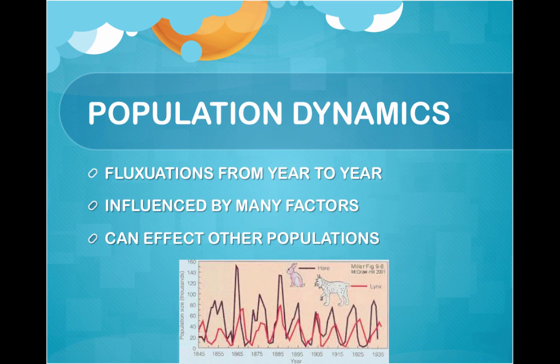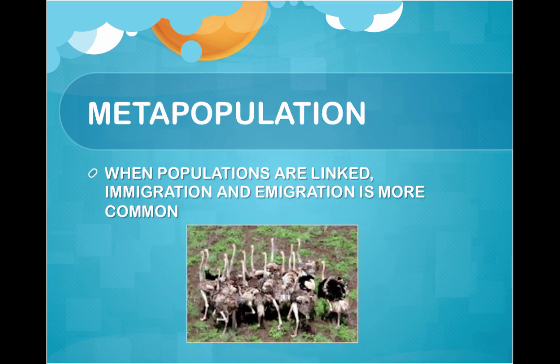Population dynamics looks at fluctuations from year to year. It's influenced by many factors and can affect the population of other species. Remember, immigration and emigration also affect population size. If a population increases, emigration usually increases. When populations are linked, it's called a metapopulation, and immigration and emigration are more common between them.